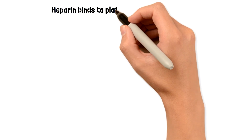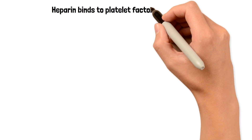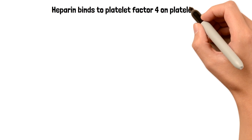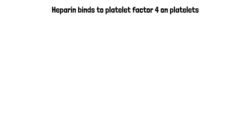Now let's talk about the cascade of events that happen specifically. Heparin is going to first bind to platelet factor 4, which is found on platelets, and this will activate platelets. This forms a complex together with the heparin and the PF4.